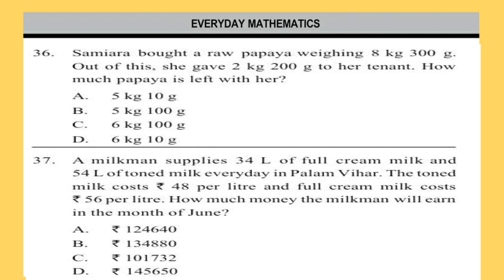Question 37: A milkman supplies 34 litres of full cream milk and 54 litres of toned milk every day in Palam Vihar. The toned milk costs rupees 48 per litre and full cream milk costs rupees 56 per litre. How much money will the milkman earn in the month of June?